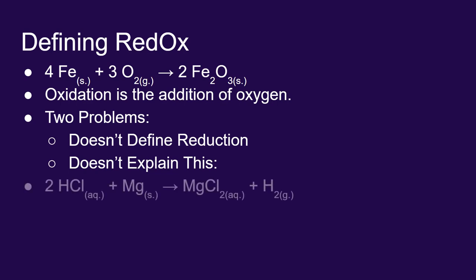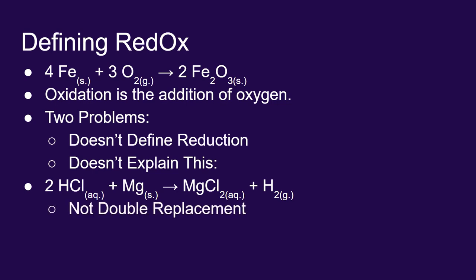It also doesn't explain this process. If you put magnesium in hydrochloric acid, you get magnesium chloride and hydrogen gas. This is a single replacement reaction, not double replacement. So if it's not double replacement, it must be a redox reaction. It must be oxidation and reduction, but there's no oxygen here. Using oxidation to mean the addition of oxygen just isn't an adequate enough definition.